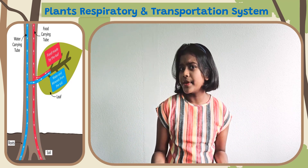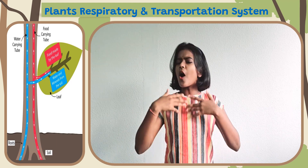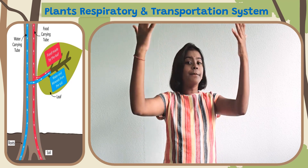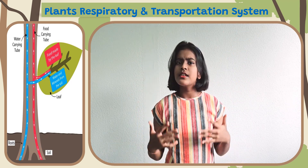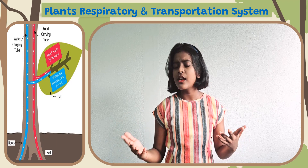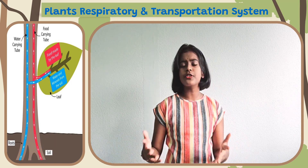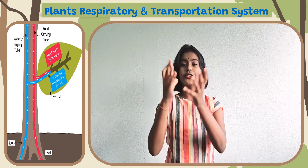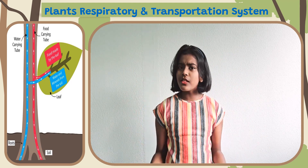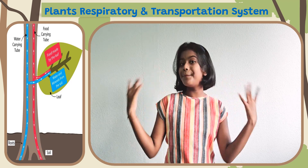What happens if we remove the food carrying tubes? All the food which the leaves make will remain above the cut. So if this plant is a flowering plant, all the food will go to the flowers. If all the food goes to the flowers, the flowers will produce fruit. So when all the food goes to the fruit, the fruit will become extra bigger.